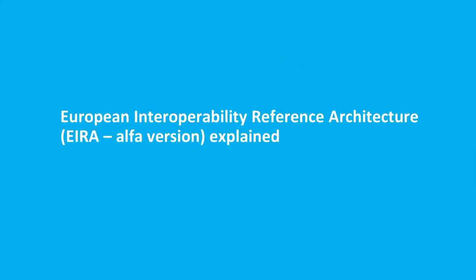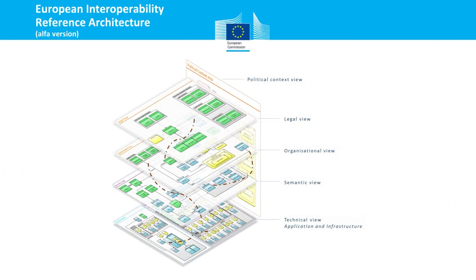In this section I am going to present the European Interoperability Reference Architecture in detail. The EIRA is divided into five main views created according to the European Interoperability Framework, with views mapped one-to-one to the layers of the framework. The reference architecture is divided into a legal, organizational, semantic, and technical view. The technical view is further divided into application and infrastructure. The vertical layer is the political context view.